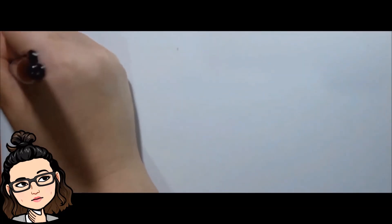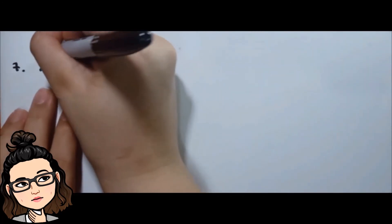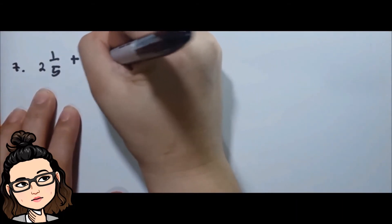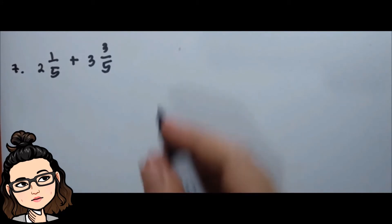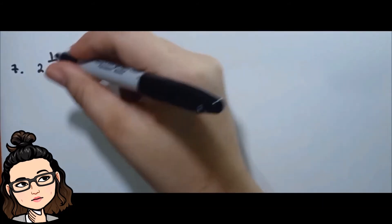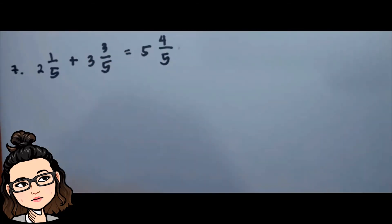Let's try an example with mixed numbers. We have 2 and 1/5 plus 3 and 3/5. Since they have similar fractions, we add the whole numbers and the numerators separately: two plus three is five, and one plus three is four. Copy the denominator. So the final answer is 5 and 4/5.